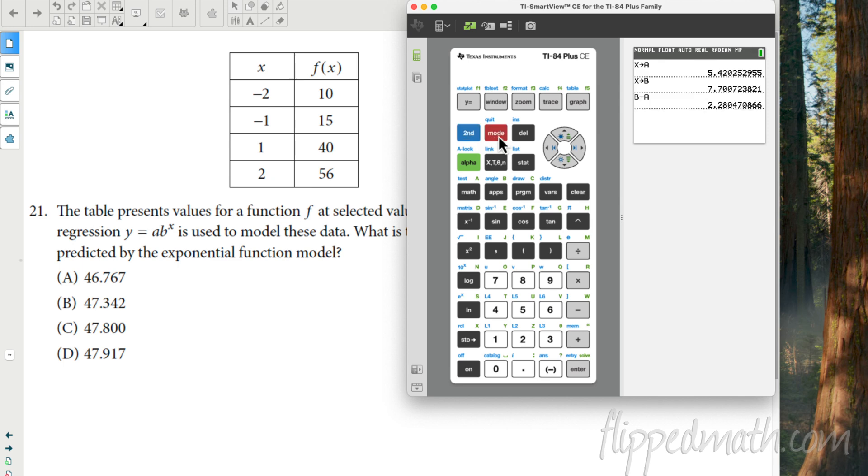And then we go into stat. We go over to calculate up here. And we look for exponential regression. Scroll up to choice zero. It says exponential regression. And then we have L1 and L2. And by the way, I like to go down to where it says store the regression equation. I'm going to hit vars, which stands for variables. I go over to the right and then all my function variables are in there. Yeah. I want to store it into Y1 because I'm going to need that.